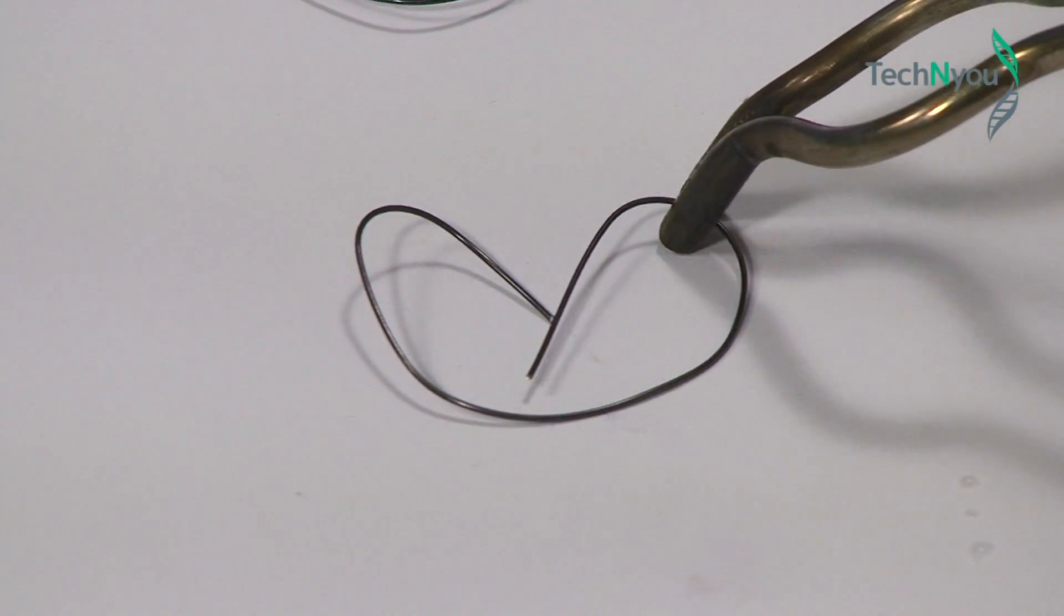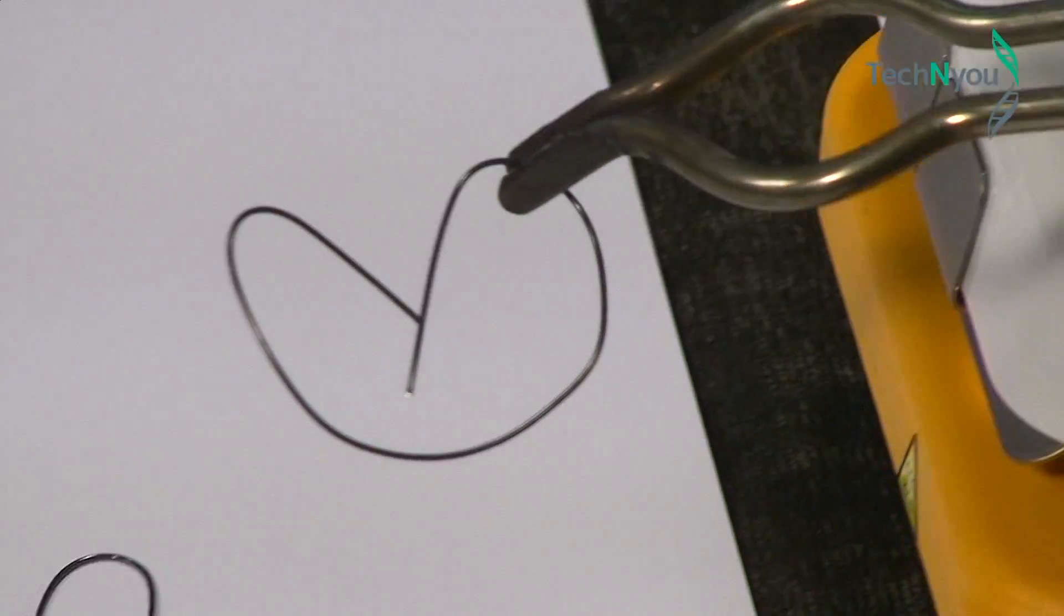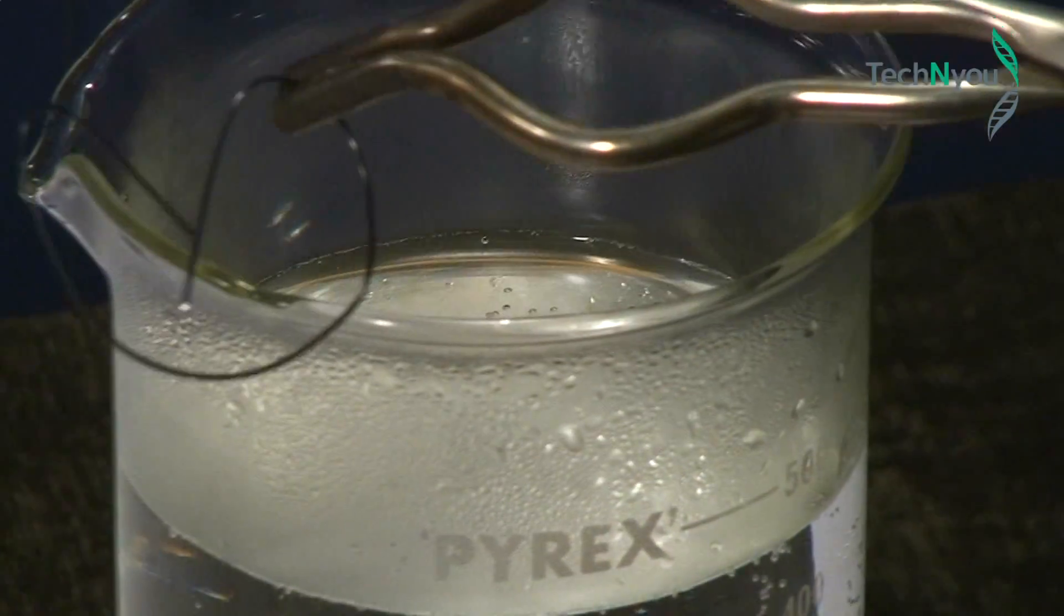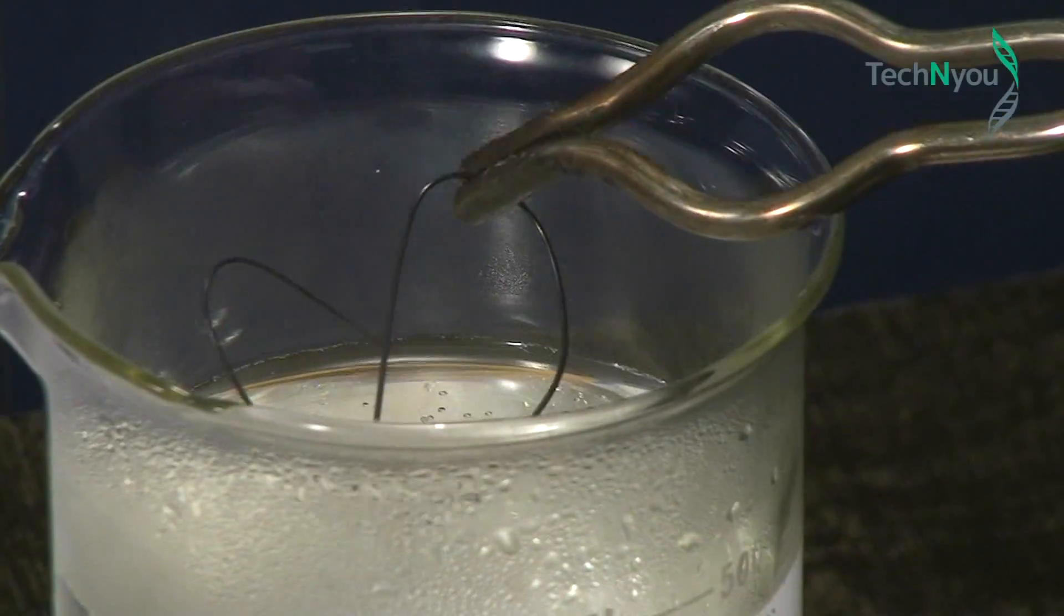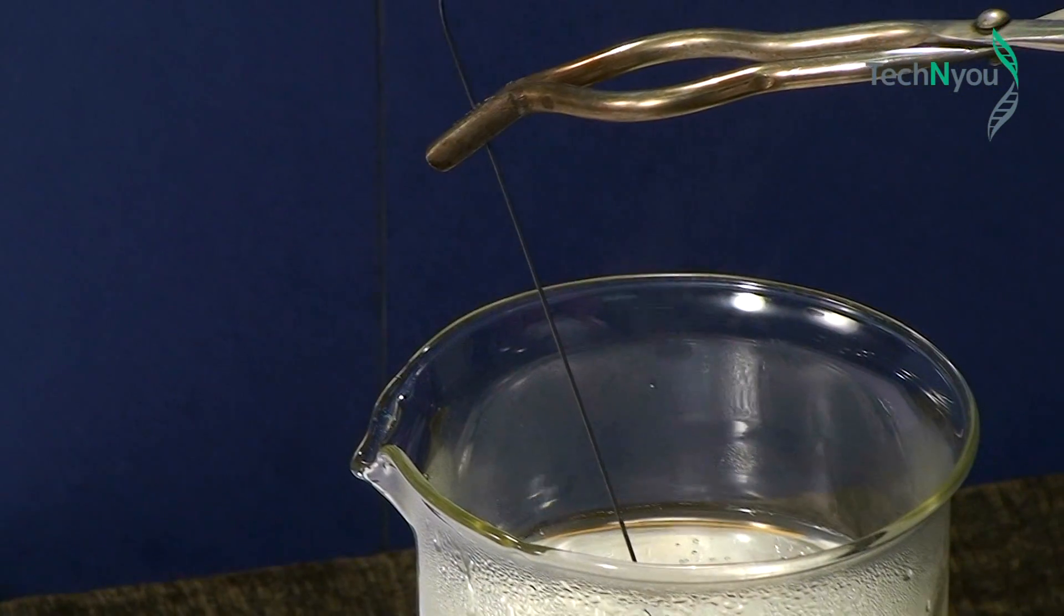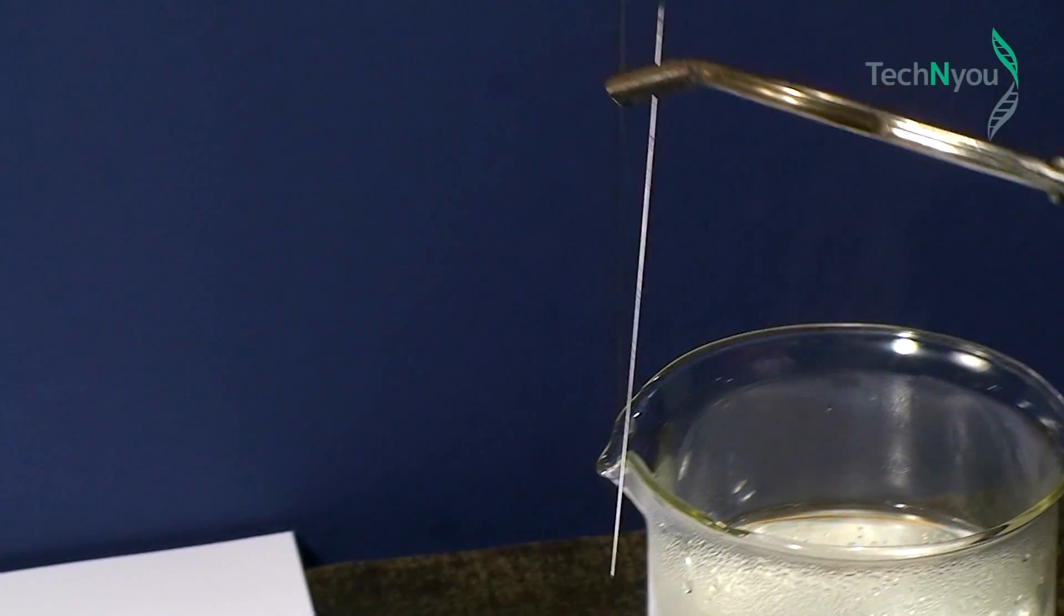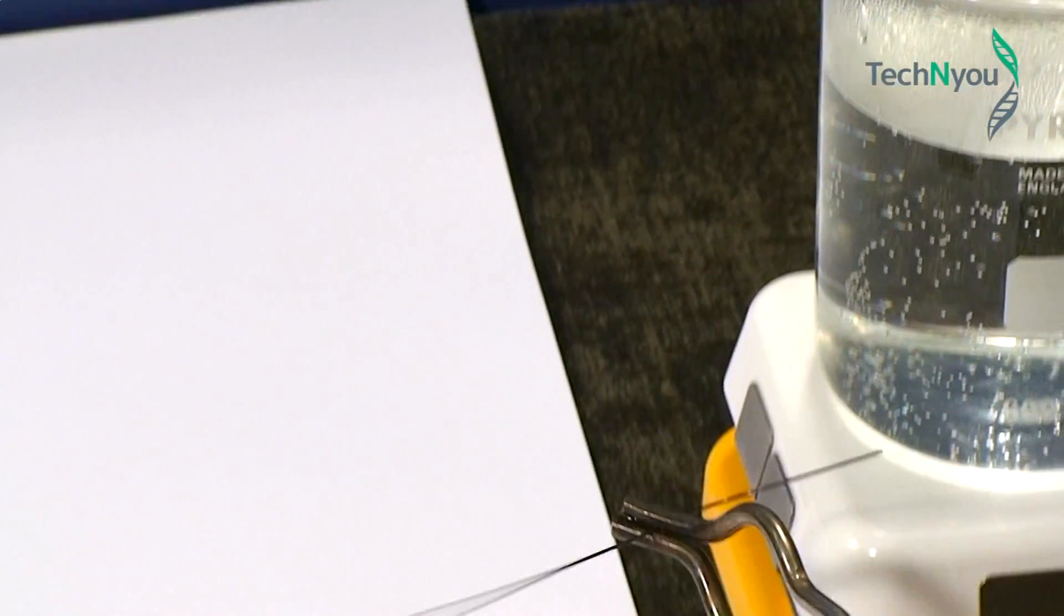If Nitinol wire is given a certain shape it remembers that shape. It can be twisted or deformed into new shapes at lower temperatures but if it is reheated to its remembering temperature it will quickly recover its remembered shape.